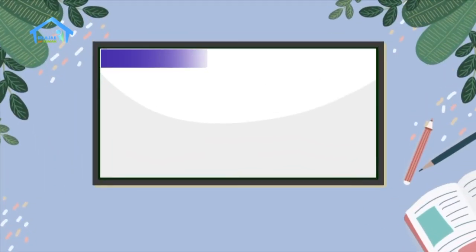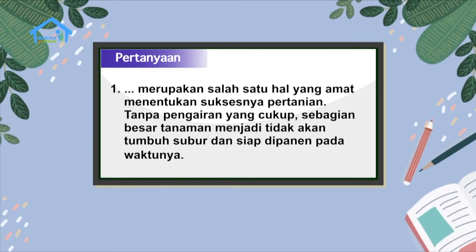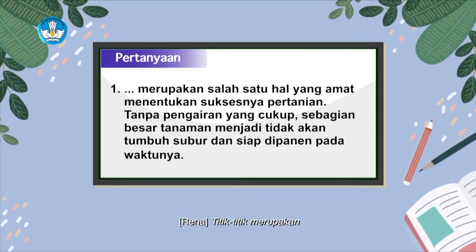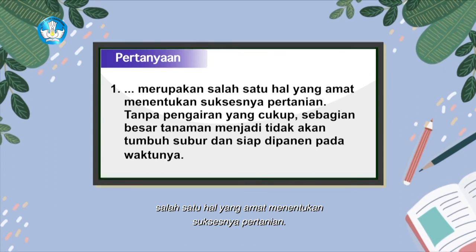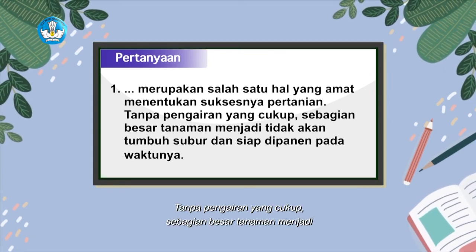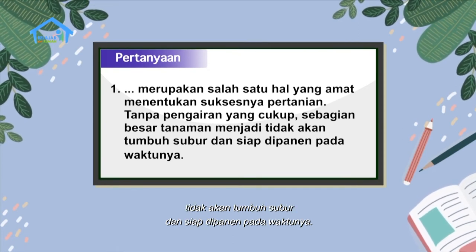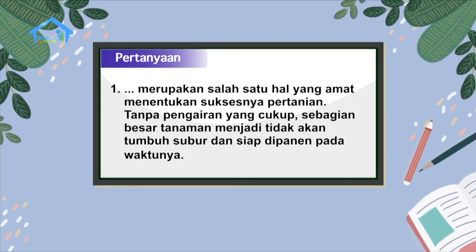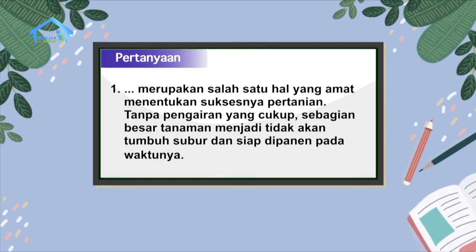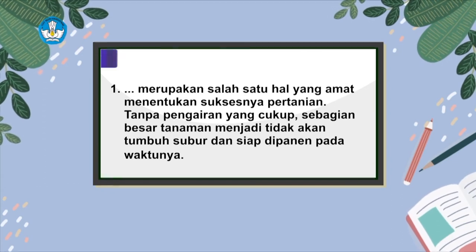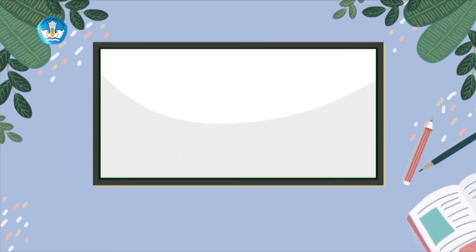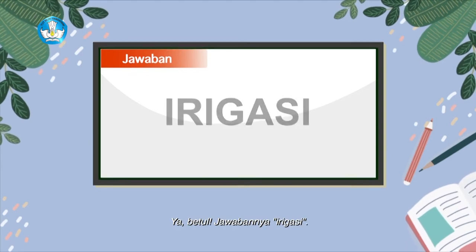Teman-teman, kita coba berlatih menjawab pertanyaan berikut dengan menggunakan kata-kata yang baru saja kita pelajari. Titik-titik merupakan salah satu hal yang amat menentukan suksesnya pertanian. Tanpa pengairan yang cukup, sebagian besar tanaman menjadi tidak akan tumbuh subur dan siap dipanen pada waktunya. Jawabannya irigasi.